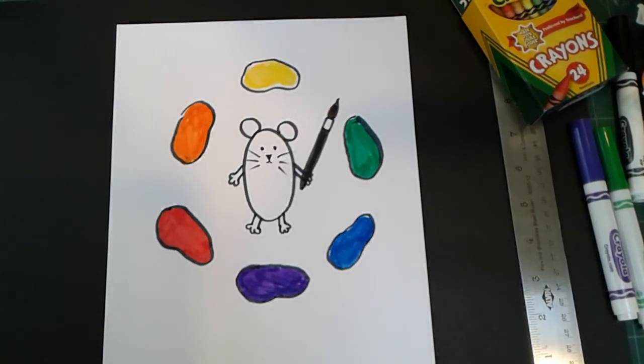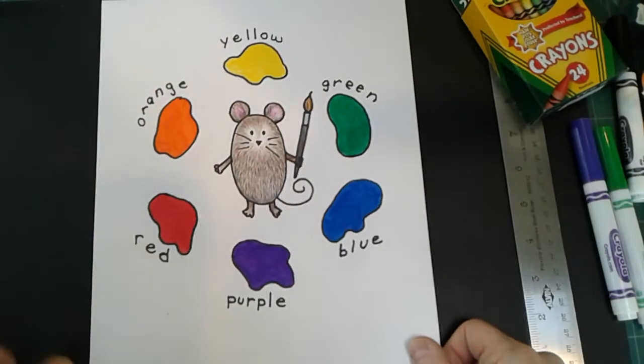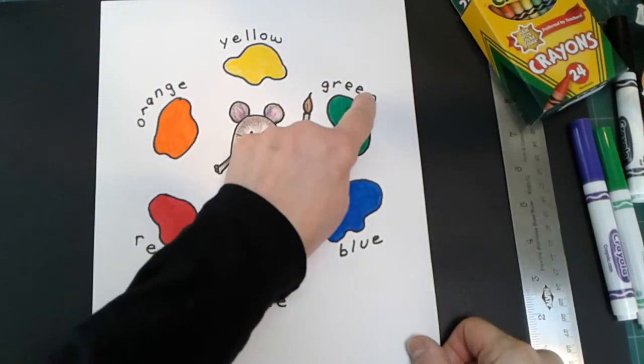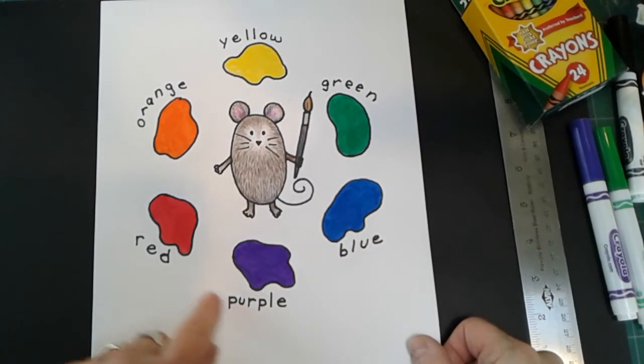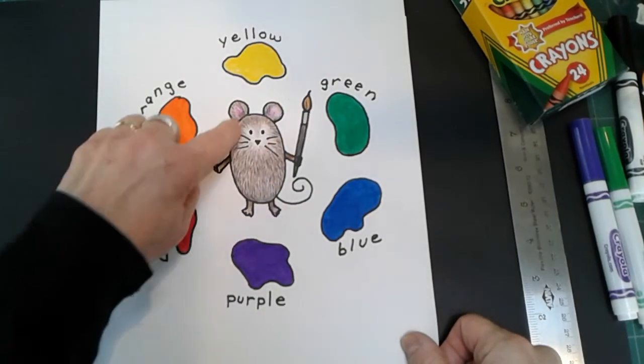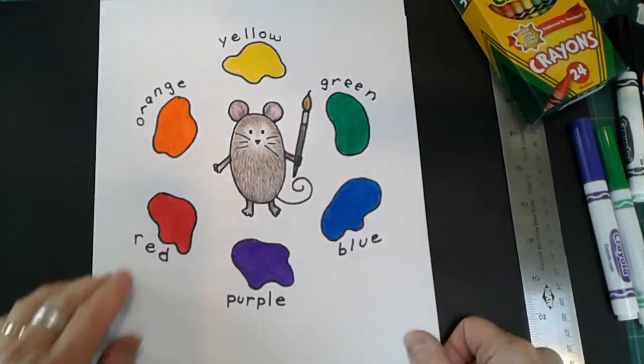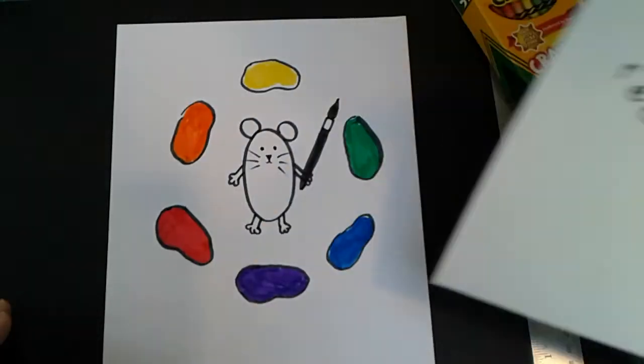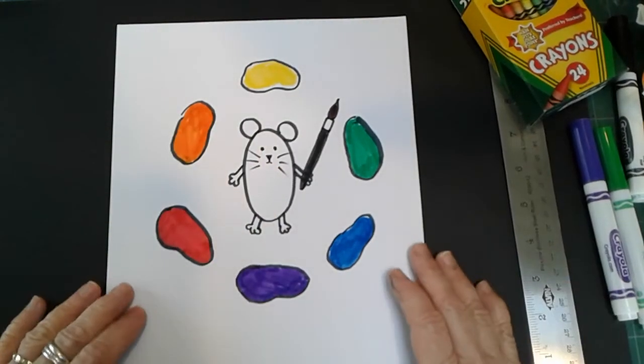At this point, you can decide if you want to add the names of your colors, like I did here. And also, if you want, you can color in your mouse. But it's okay if you leave him blank and keep him white, like this one.